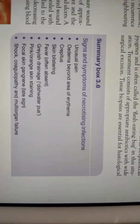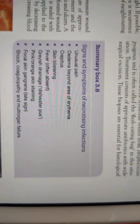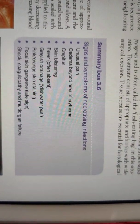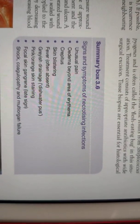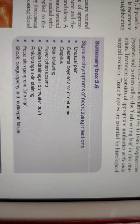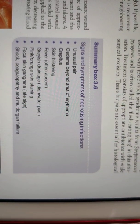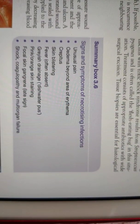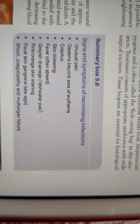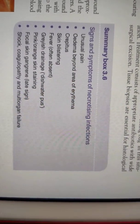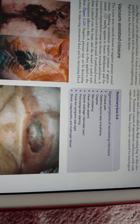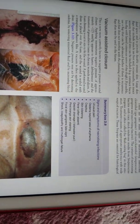Two main types: clostridial, which causes gas gangrene, and non-clostridial, which causes streptococcal gangrene and necrotizing fasciitis. Key symptoms are unusual pain more than expected, edema beyond the area of erythema, crepitus, skin blistering, fever, gray discharge, pink-orange skin staining, focal skin gangrene. In late stages: shock, coagulopathy, and multi-organ failure.